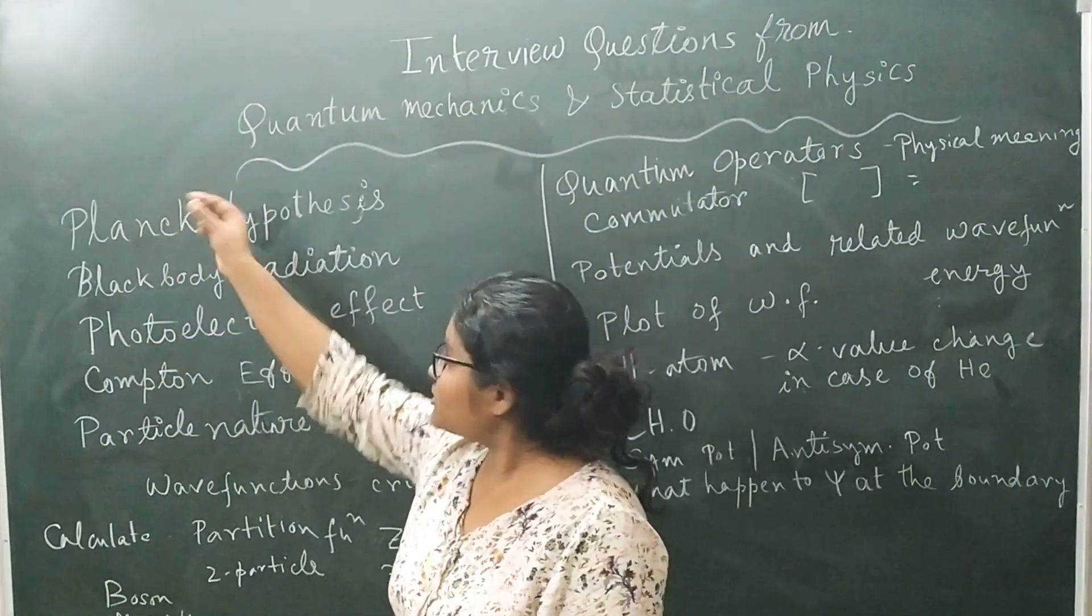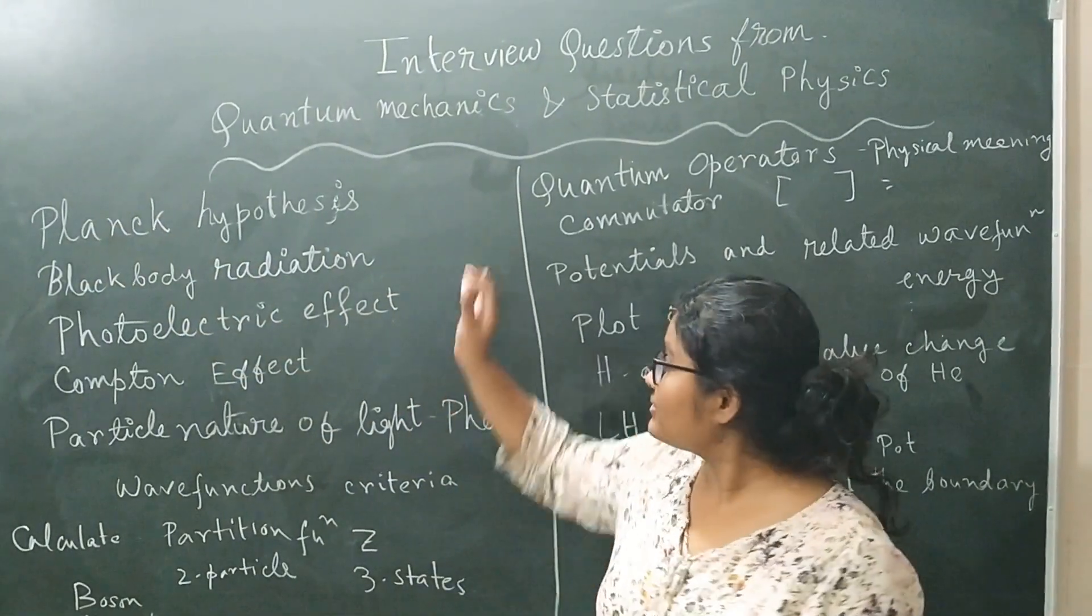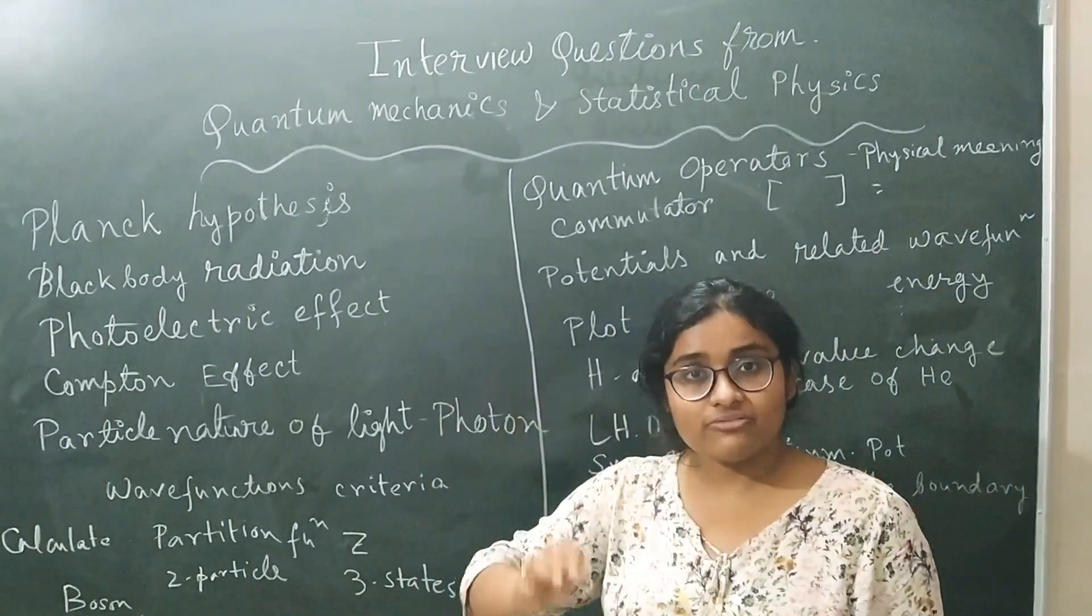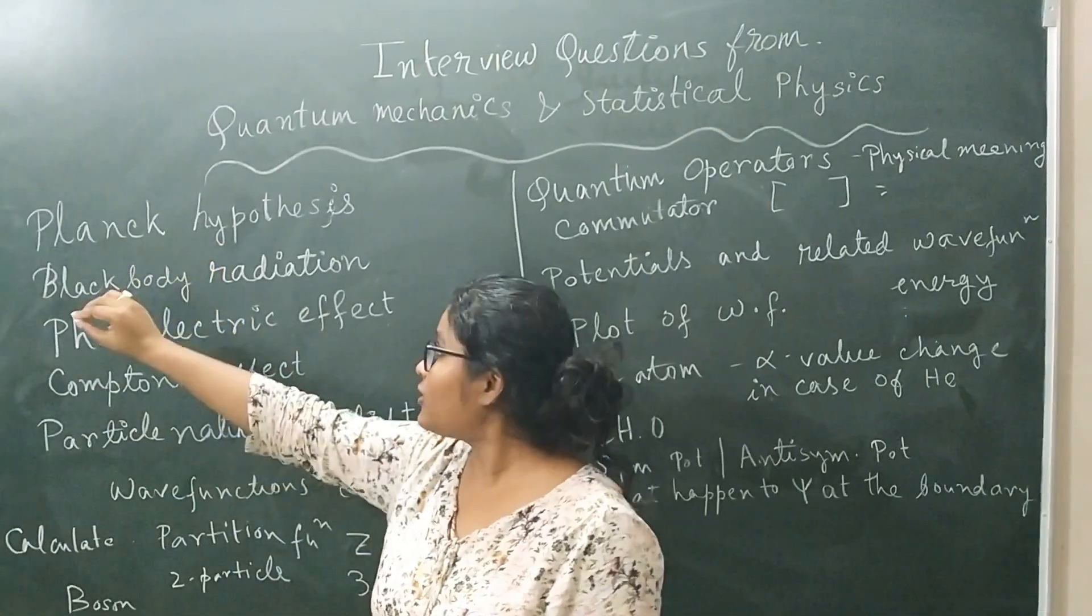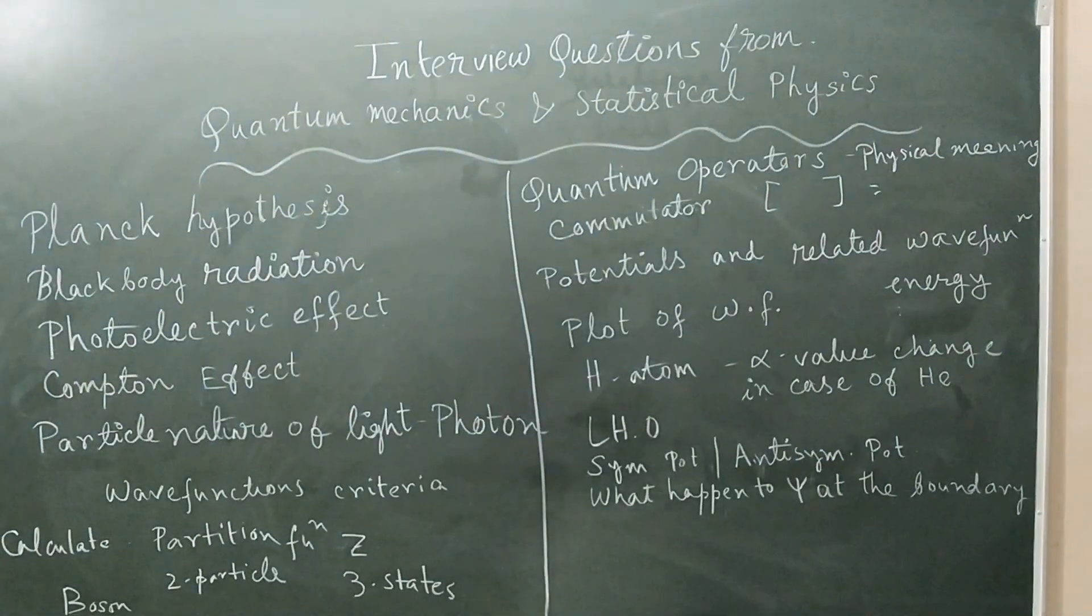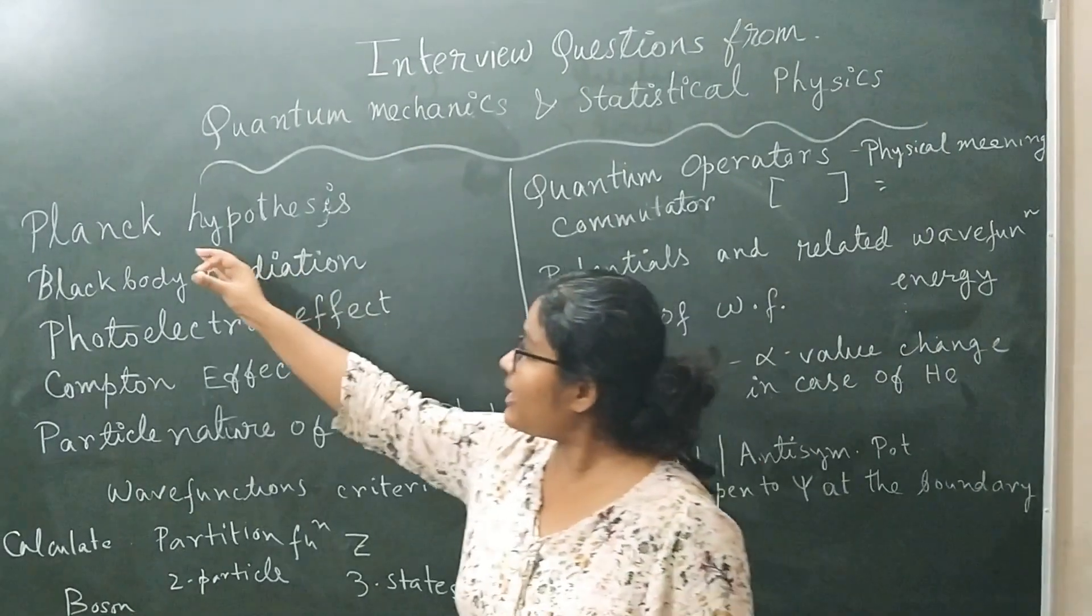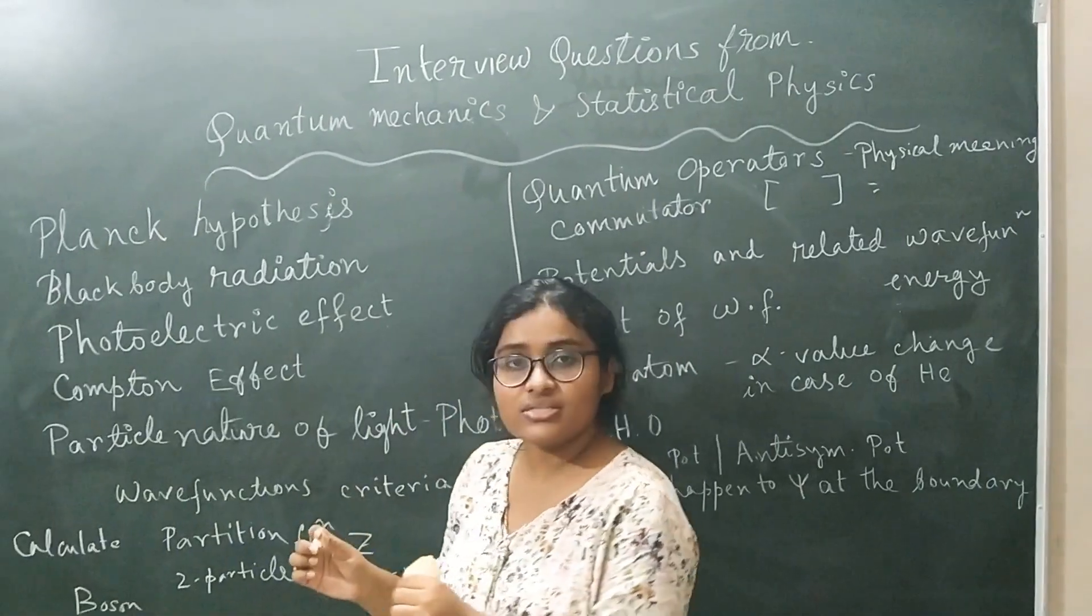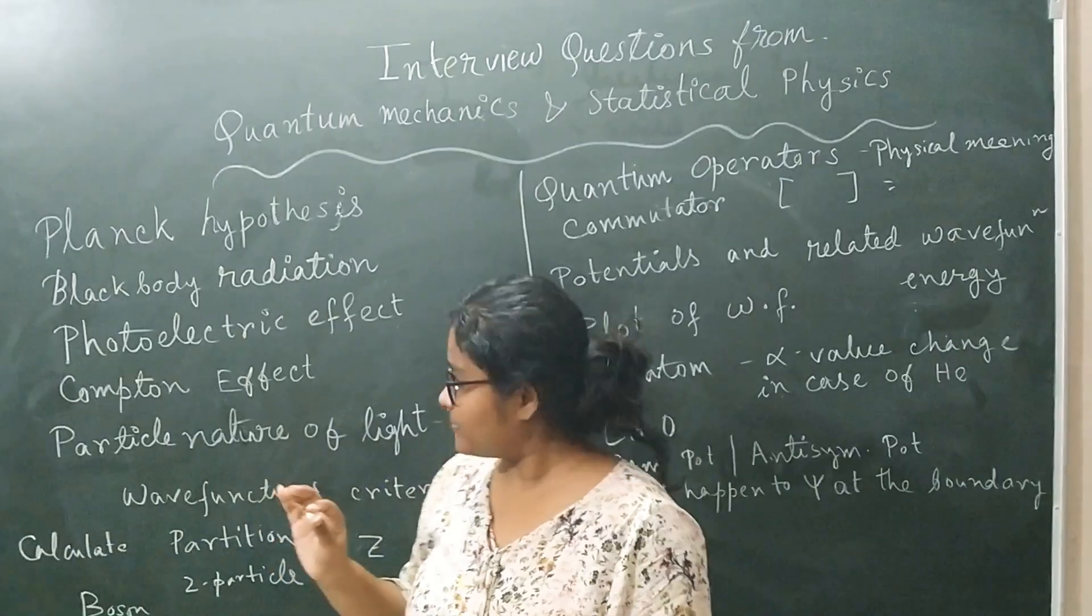The first thing is the questions IIT BHU, they asked Planck hypothesis. I mean, how Planck modified or how Planck gave the theory of the black body radiation. You should have a brief comment on black body radiation. What are the problems regarding the describing, the classical theory regarding black body radiation and how Max Planck overcame the limitations and found the black body radiation theory.